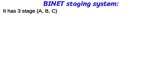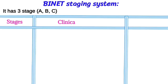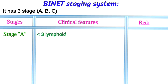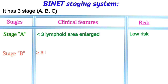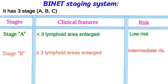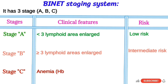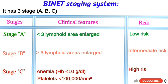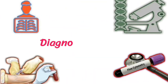The Binet staging system has three stages: A, B, and C. Stage A: less than three lymph node areas involved, low risk. Stage B: three or more lymph node areas involved, intermediate risk. Stage C: anemia (Hb less than 10) or decreased platelets, high risk.